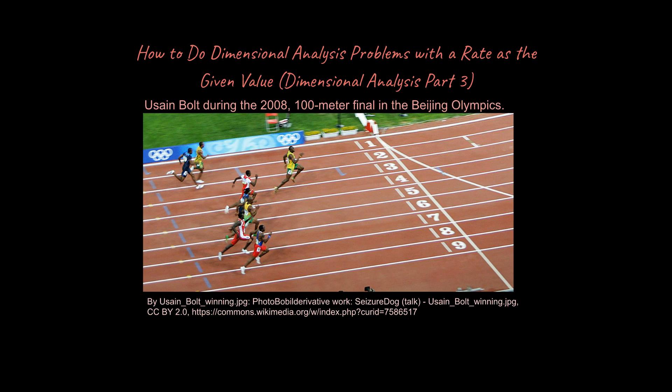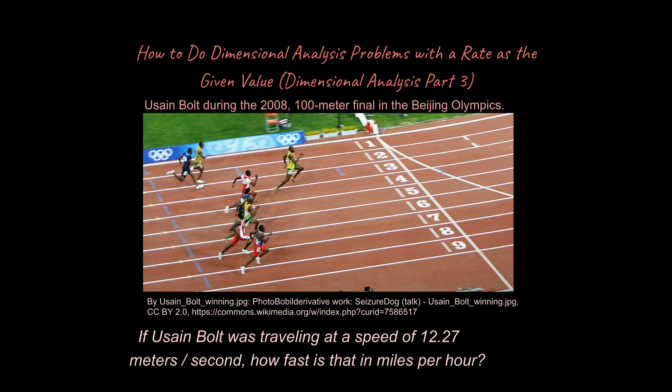So let's go ahead and take Usain Bolt's running ability and make it into a physics rate problem so we can talk about something interesting here. Let's say Usain Bolt was traveling at a speed of 12.27 meters per second. How fast is that in miles per hour? You could be wondering, why are we going to miles per hour? One, I want to do a rate problem that uses dimensional analysis. Two, I want to compare something that uses the metric system to our everyday life. And if you grew up in the United States, you're probably more familiar with miles per hour. So let's go ahead and see how to approach this problem.